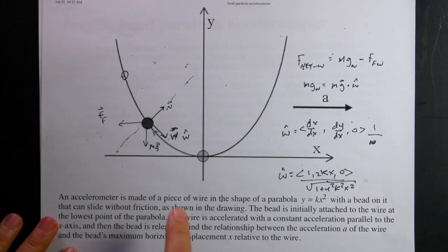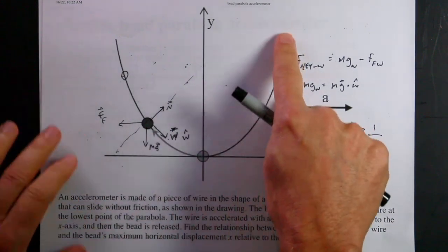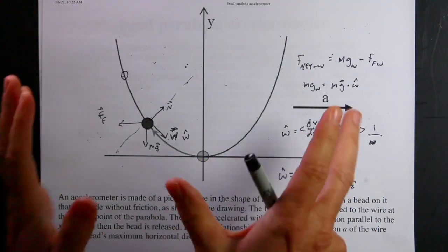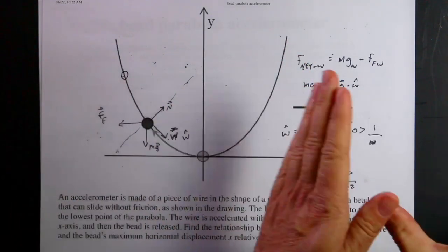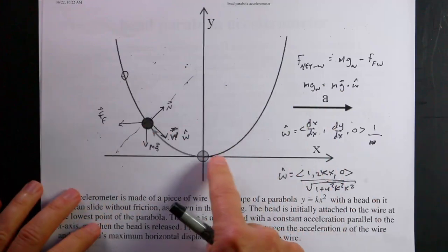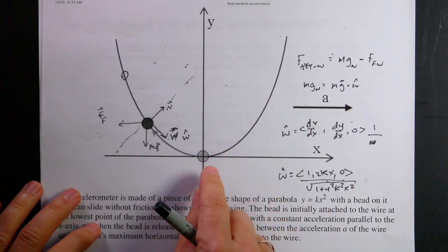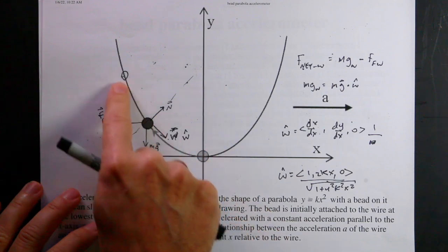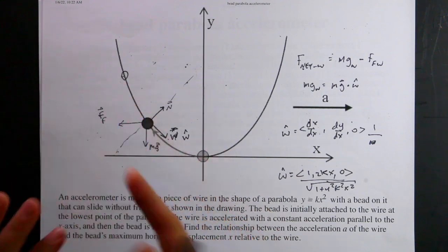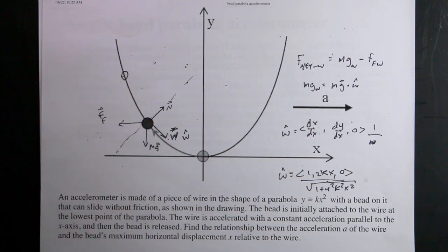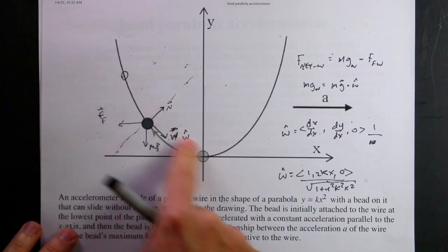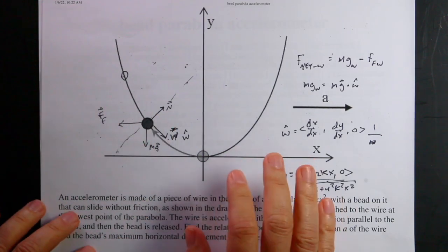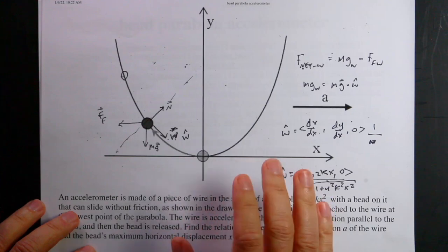Here's the problem: there is a parabolic wire with a bead on the wire, and the whole thing accelerates horizontally. The question is, once it's accelerating and the bead is held there and let go, how high up the wire does it go? It will actually oscillate, but the question is what's the maximum height.